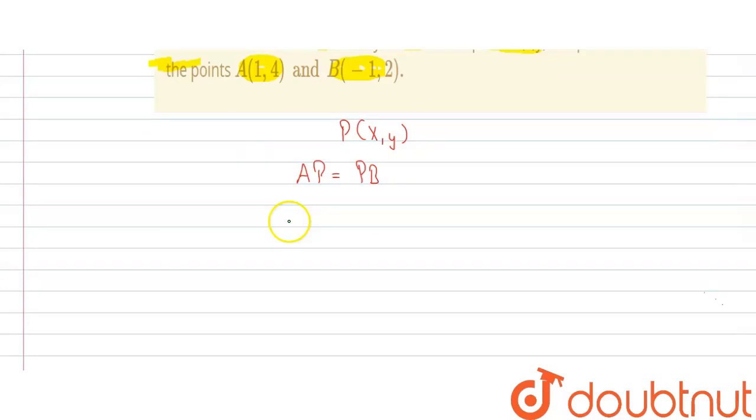Now we know that distance between two points is given by under root of x2 minus x1 whole square plus y2 minus y1 whole square. Now the point A is (1,4), point P is (x,y).